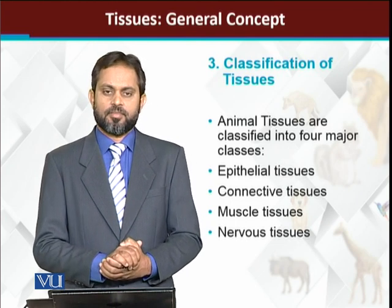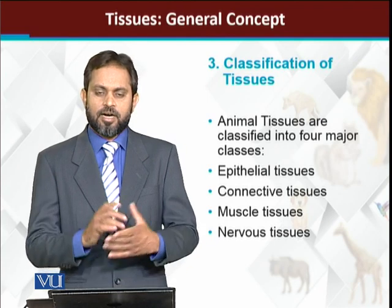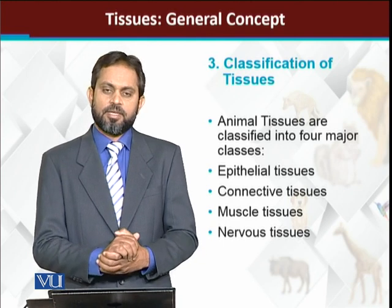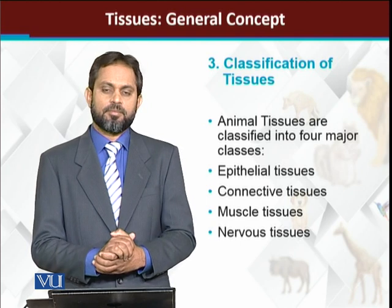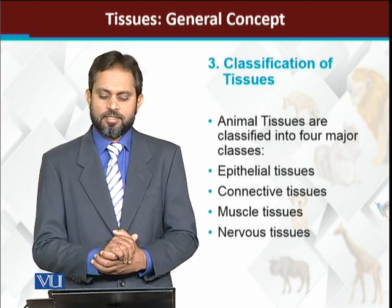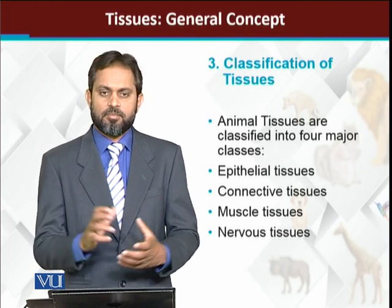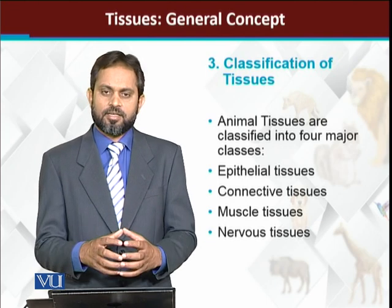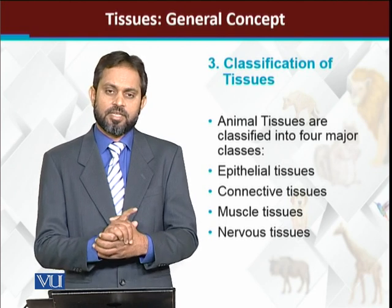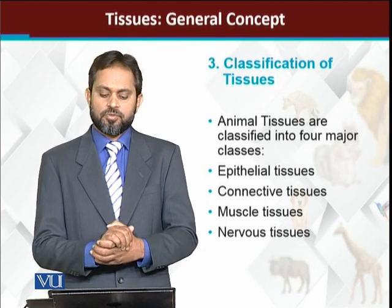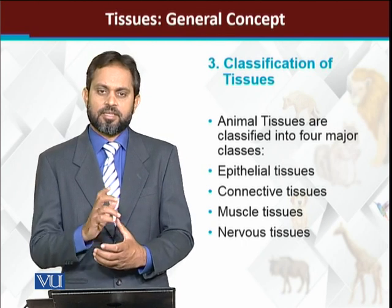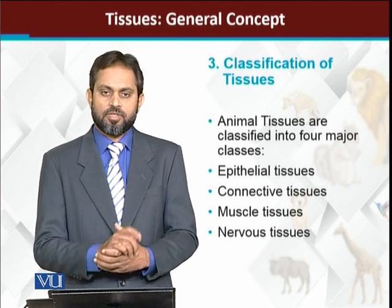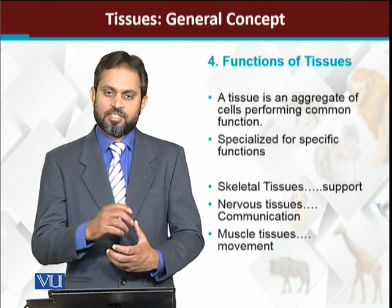The classification of tissues: broadly, based on their function and location, tissues are divided into four major categories. First, we have epithelial tissues — epithelium means outermost, so these form the outermost boundaries. Second, connective tissues — their general job is to store material within the body, hold organs in place, and arrange specific layers. Third is muscle tissues, which contract and relax to cause movement. Fourth is nervous tissues — the tissues of the brain are nervous tissues.